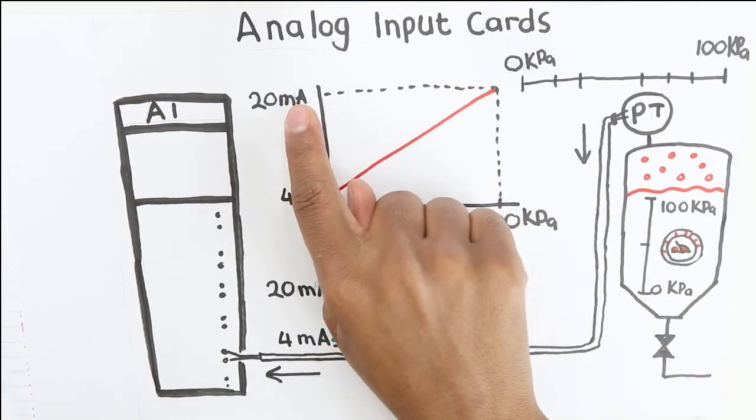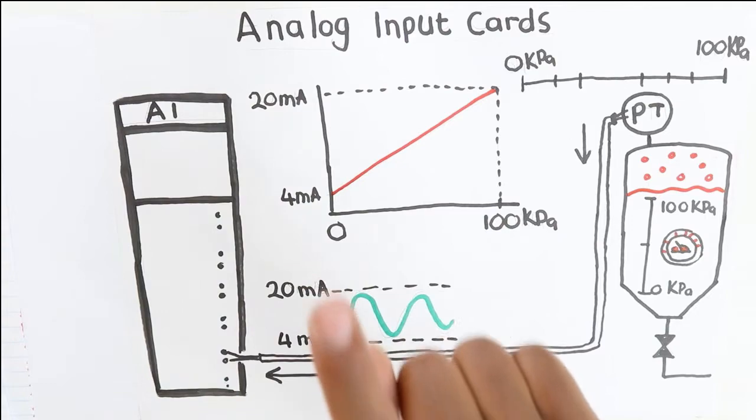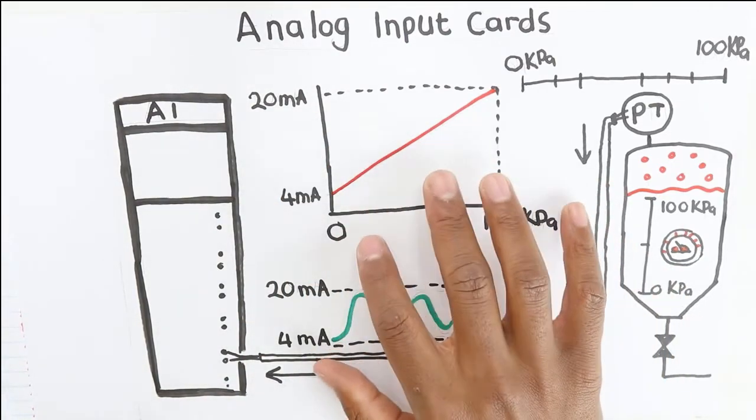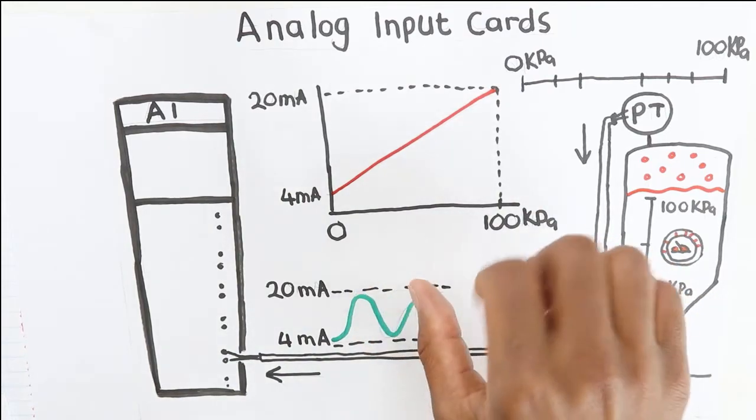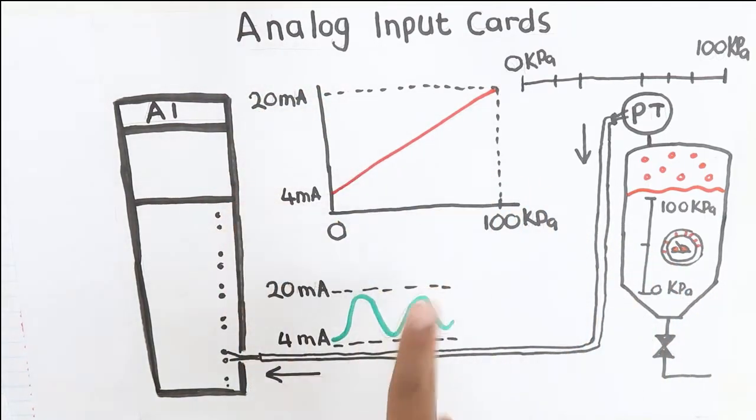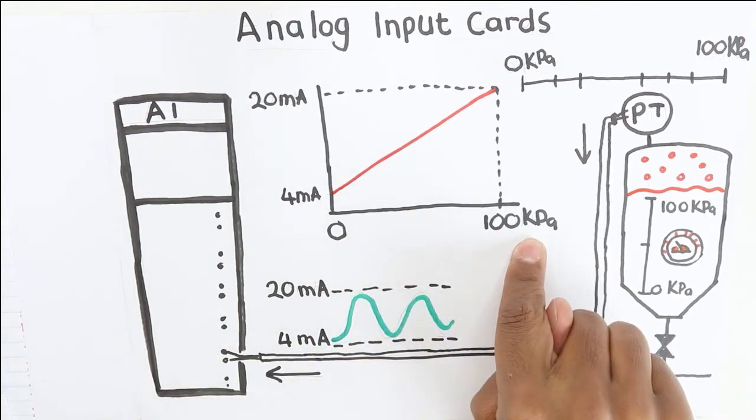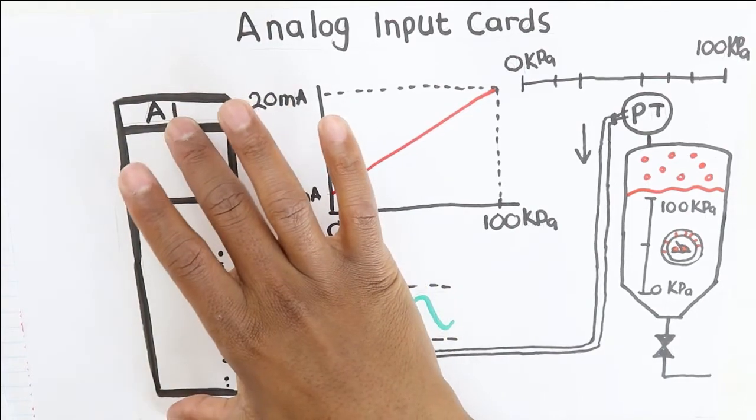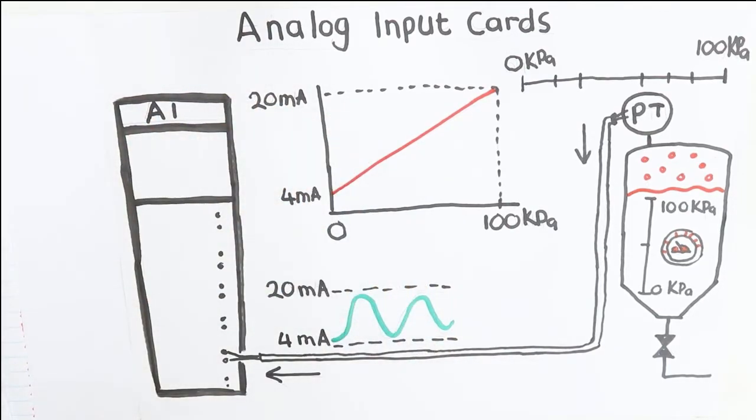So your job as an automation engineer is to convert this milliamp signal back to the 0 to 100 kPa so that you can use it in your program and it makes sense to you. So then how do you do that?